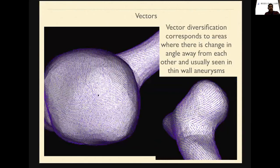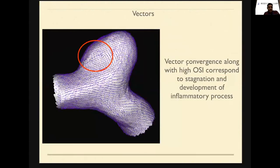Coming to the vectors — here are two aneurysms showing areas of diversification. These areas tend to be the areas where there is a significant sudden change of the blood vectors, and this is the area mostly associated with high pressure differentiation and formation of blebs. There is another area with vector convergence where the blood goes and forms a stagnant region. This area generally corresponds to the development of inflammation, because once the blood is stagnant, there will be endothelial expression of nitric oxide, endothelial inflammation signs will develop, and atherosclerotic changes correspond accordingly.